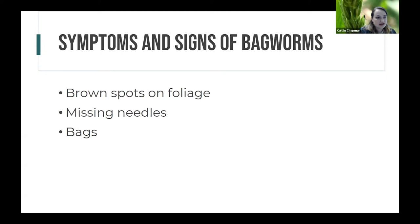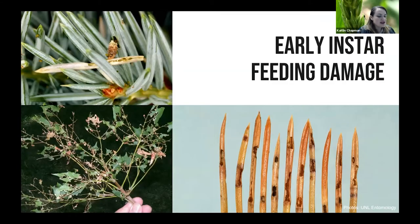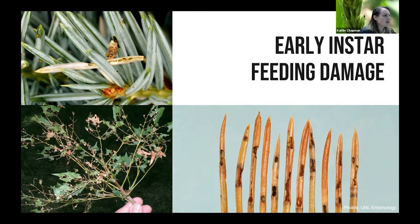Symptoms and signs of bagworms in the landscape include brown spots on foliage, missing needles due to defoliation, and the easiest sign — the presence of bags on our trees. This is what early instar feeding damage looks like. You can actually see a tiny bagworm caterpillar eating a single needle on an evergreen, which gives you an idea of how small these first instars are. But the damage really adds up.